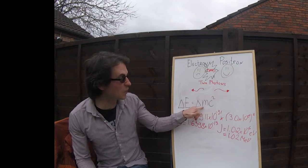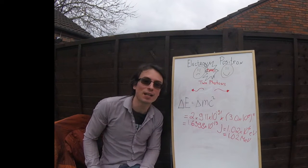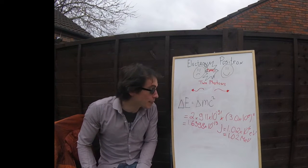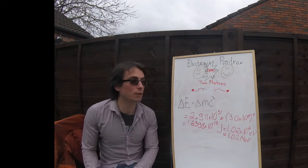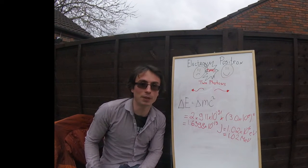That means that all of that mass of those two particles gets converted to energy. And we can calculate that amount. All we need to do is use delta E is equal to delta mc squared.